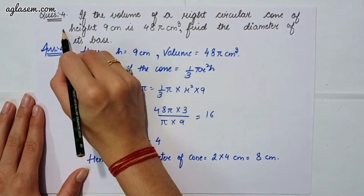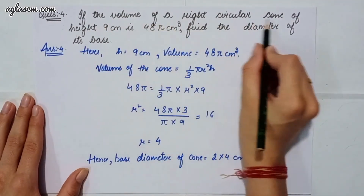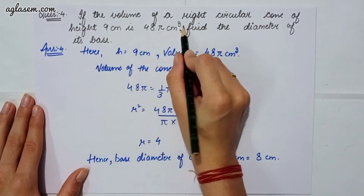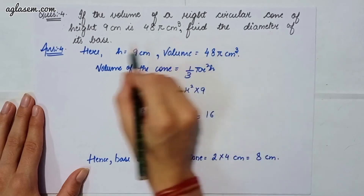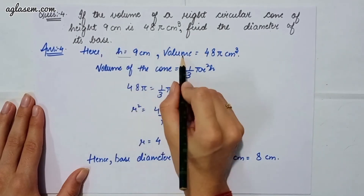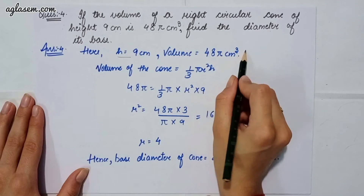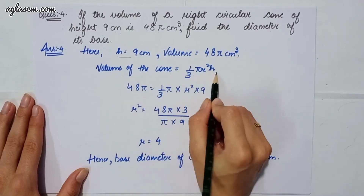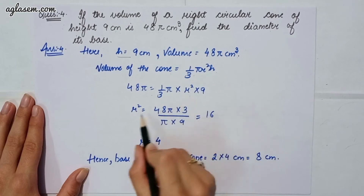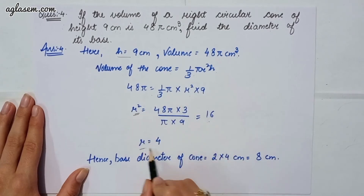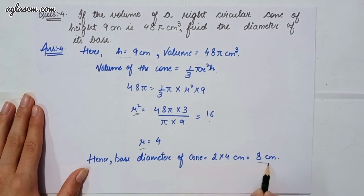Moving to our fourth question: if the volume of a right circular cone of height 9 cm is 48π cm³, find the diameter of its base. Height is 9 cm and volume is 48π cm³. Using volume of cone = 1/3 × π × r² × h, and placing the values, we get r² = 16, so r = 4. The base diameter of the cone is 2 × 4 = 8 cm.